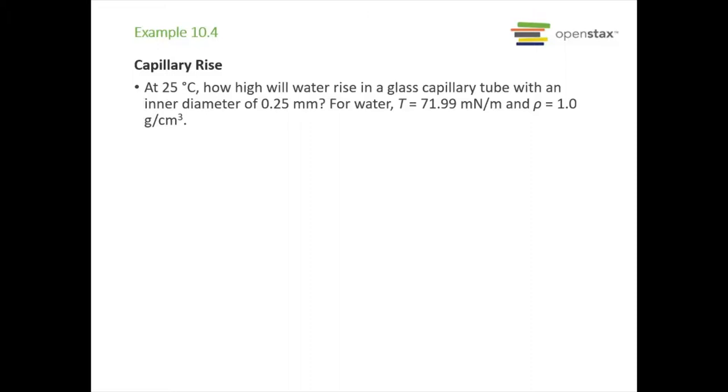So let's look at an example. At 25 degrees Celsius, how high will water rise in a glass capillary tube that has an inner diameter of 0.25 millimeters? For water, the surface tension is 71.99 millinewtons per meter and the density is one gram per cubic centimeter. We need to remember that our height is equal to 2T times the cosine of theta divided by r rho g. For water, theta equals zero degrees, so the cosine of zero is equal to 1.